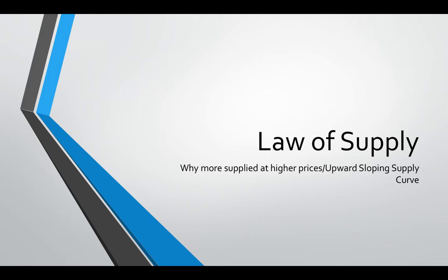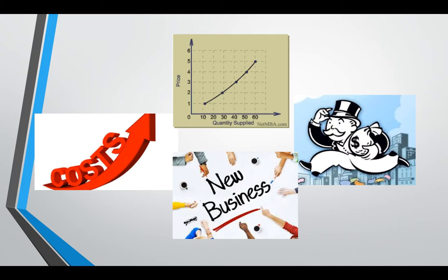This video is an addition to the last video. I wanted to clarify the three reasons why the law of supply is true — why the supply curve is upward sloping. Don't confuse this with demand. The demand curve is downward sloping, but for supply you have to put yourself in the mindset of a producer. If the price is going up, for three different reasons, as a supplier you are going to be willing and able to make more available for sale.